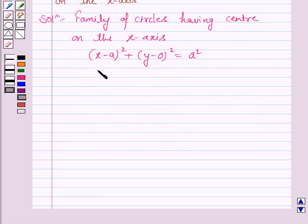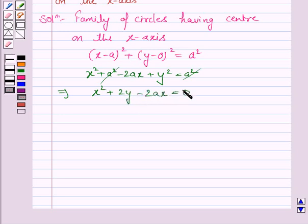Now, we'll simplify this. So this becomes x² + a² - 2ax + y² = a². a² gets cancelled with a². So we have x² + y² - 2ax = 0.